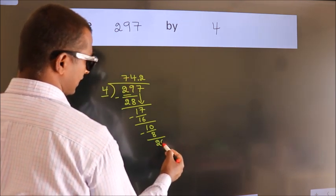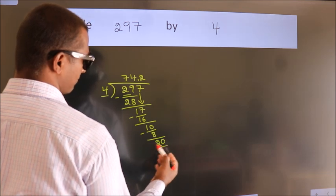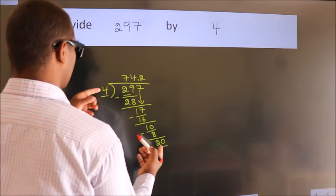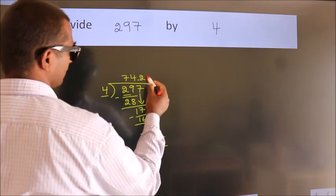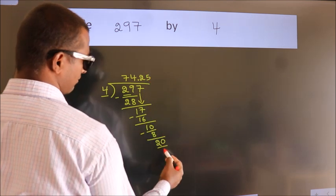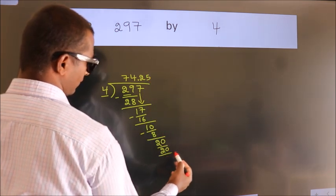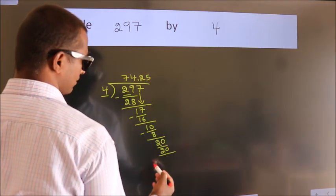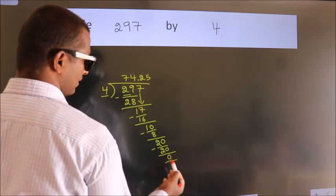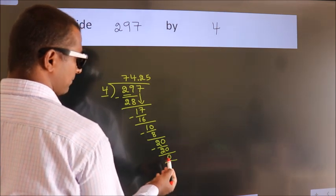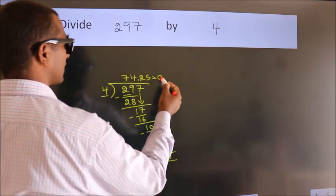So directly take 0, giving us 20. In the 4 times table, 4 fives are 20. Now we subtract and we get 0. We got remainder 0, so this is our quotient.